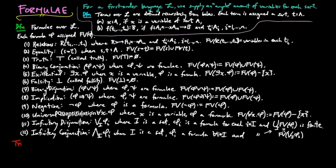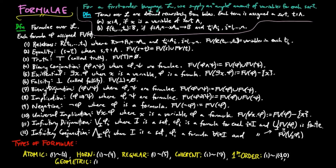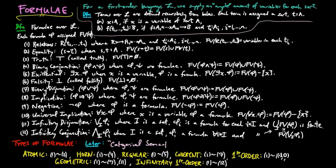We characterize the types of formulae as follows. Atomic formulae are of types one and two. Horn formulae are those of types one to four. Regular formulae are those of types one to five. Coherent formulae are those of types one to seven. First-order formulae are those of types one to ten. Geometric formulae are those of types one to seven and eleven. Infinitary first-order formulae are those of types one to twelve. We will look more closely at the distinction of formulae when we discuss categorical semantics in a later video.